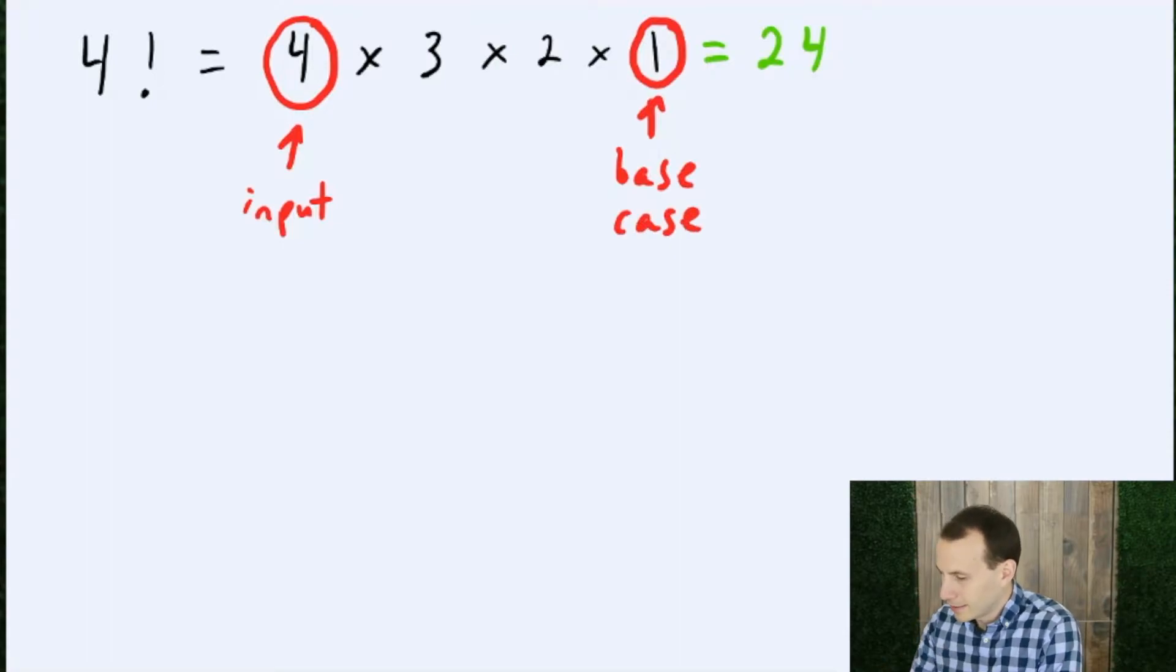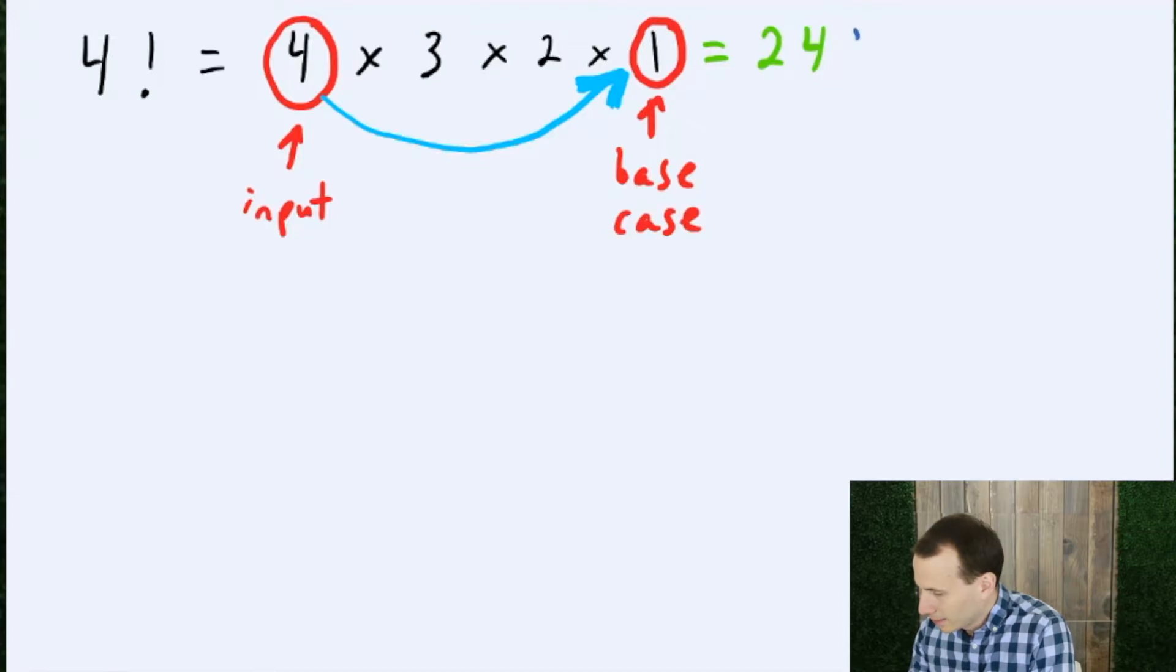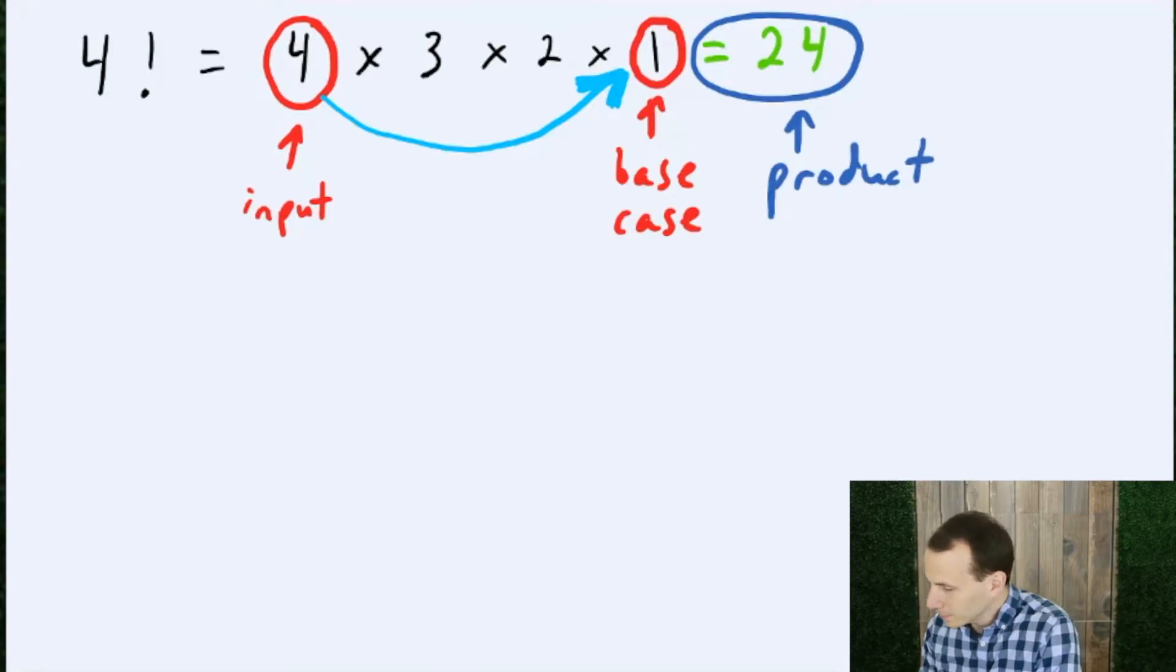And so we somehow need to get all the way from 4 to 1, and when we get there, we want to have this product built up right here, 24, and that is the number that we want to return. This is the product to be returned when we hit the base case.